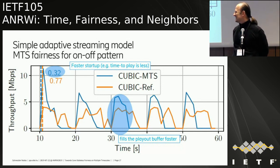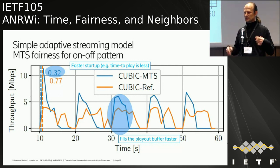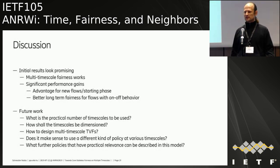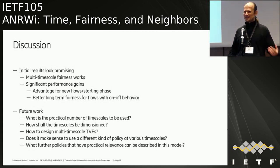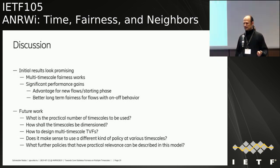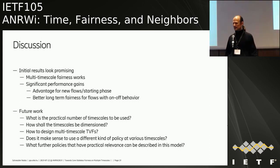These initial results look really promising. We have some kind of multi-timescale fairness which works, with significant performance gains — advantages for new flows in their starting phase and better long-term fairness. But there is quite a lot of future work. We are not sure of the practical number of timescales to use, how they should be dimensioned, how to design multi-timescale throughput value functions, or whether different kinds of policies make sense at different timescales. Thank you.